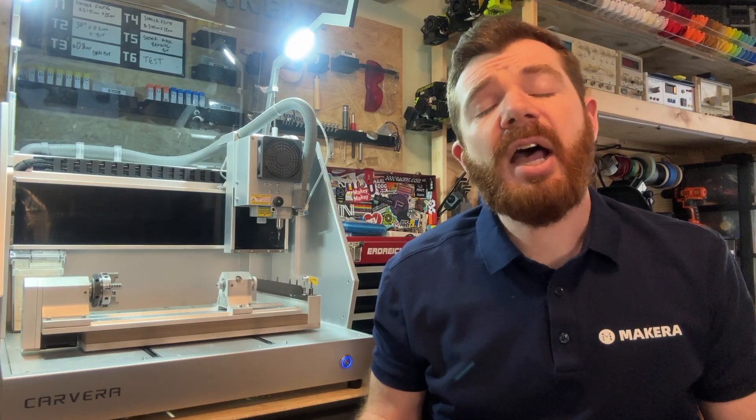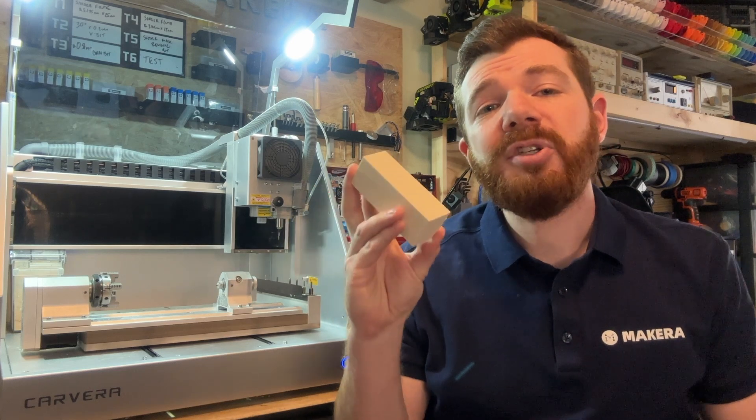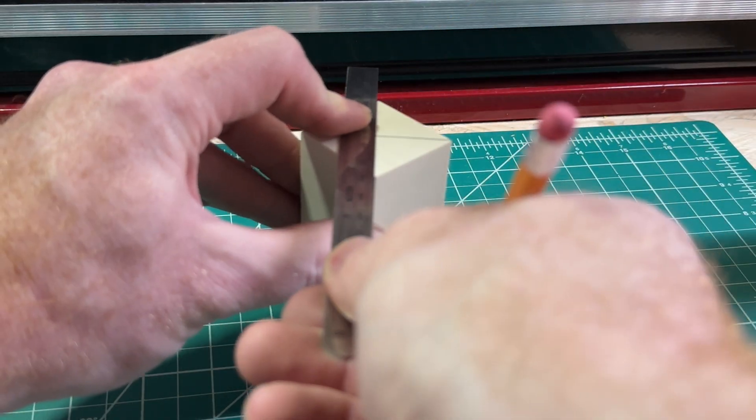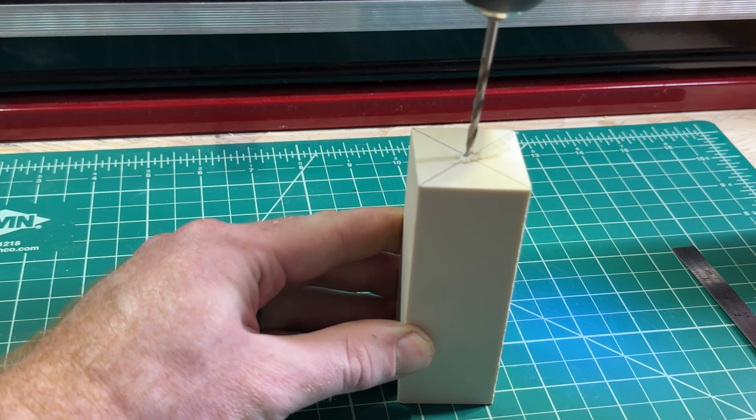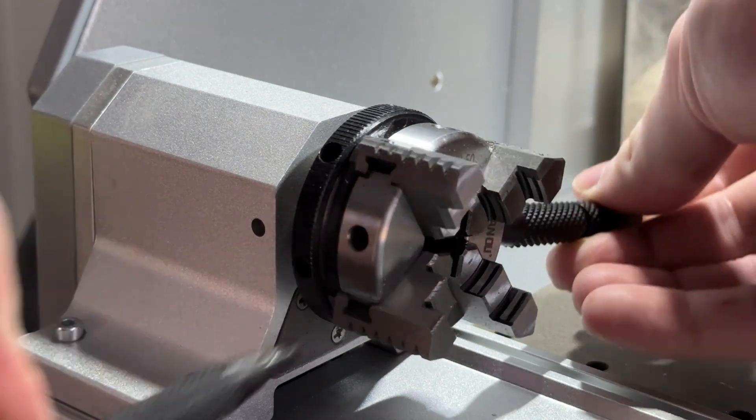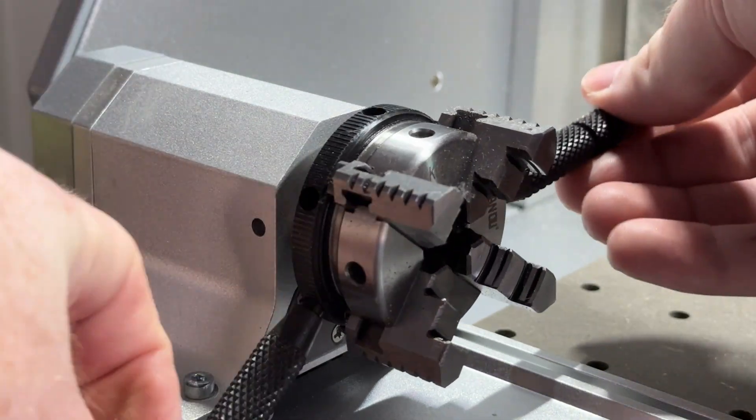When securing typical pieces of stock like the epoxy tooling board shown in the example project, we must first find the center on one side of our stock. We also recommend drilling a small hole on the center point to assist in securing it within the rotary module. We can loosen the chuck of our rotary module using the two wrenches provided.